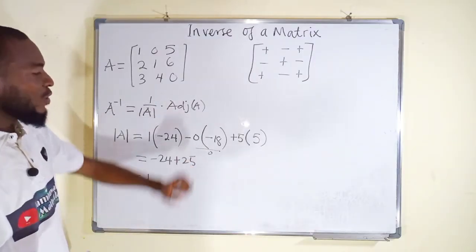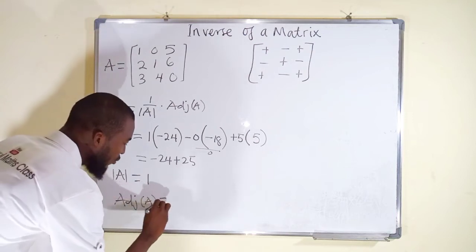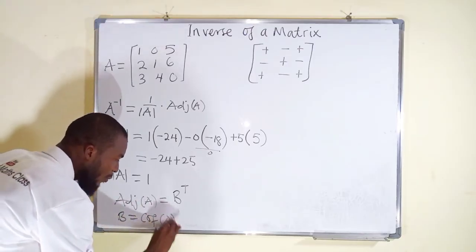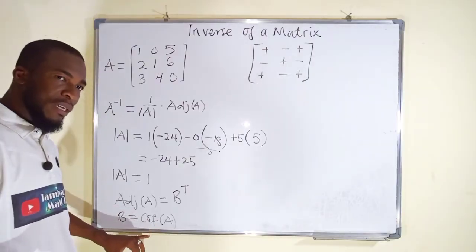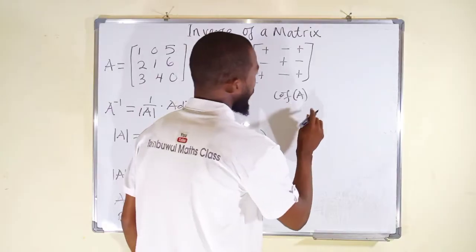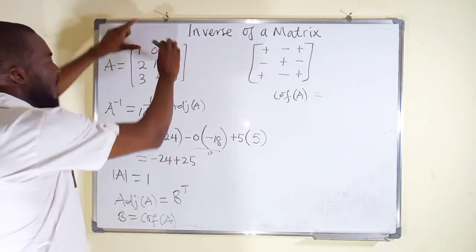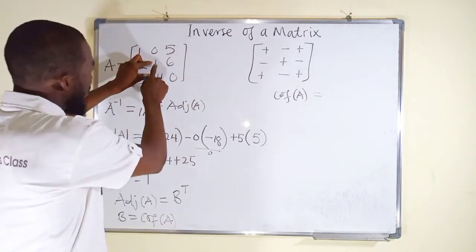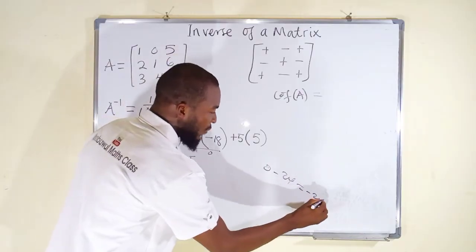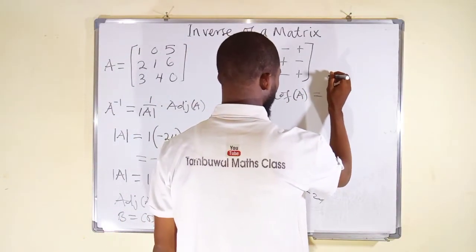Now let us go ahead and find the adjoint of this matrix. Remember that the adjoint of this matrix is B transpose, where B is the cofactors of matrix A. So we need to find the cofactors first, then take the transpose. Starting with the first entry: we close its row and column and find the determinant of the remaining entries. We get 0 minus 24, which is minus 24. The sign is positive, so the first cofactor is minus 24.